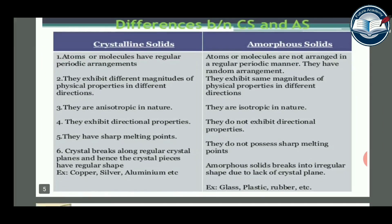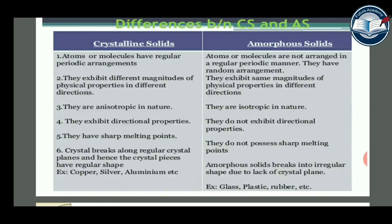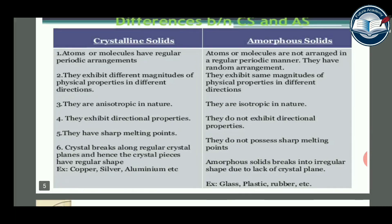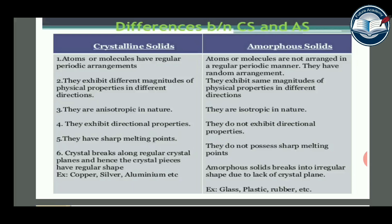The difference between crystalline and amorphous solids: In crystalline solids, atoms or molecules have regular periodic arrangements, whereas in amorphous solids, atoms or molecules are not arranged in a regular periodic manner — they have a random arrangement. Crystalline solids exhibit different magnitudes of physical properties in different directions, but amorphous solids exhibit the same magnitudes of physical properties in all directions.